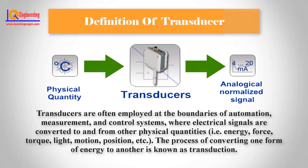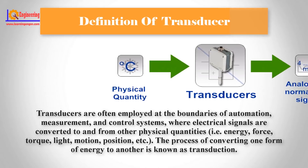Definition of Transducer. Transducers are often employed at the boundaries of automation, measurement, and control systems, where electrical signals are converted to and from other physical quantities, e.g. energy, force, torque, light, motion, position, etc. The process of converting one form of energy to another is known as transduction.